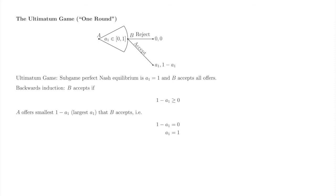B accepts if 1 minus A1 is greater than or equal to 0. You might be wondering why the inequality isn't strict — i.e., why B doesn't hold out for at least a sliver of the pie. B would certainly accept a sliver, but if A1 is equal to 1 so that B gets 0 either way, both accept and reject are best responses, hence the weak inequality. A makes B a minimally acceptable offer, which we represent by 1 minus A1 equals 0. We're at the top of the tree, so backwards induction is complete. The subgame perfect Nash equilibrium is A1 equals 1, and B accepts all offers.